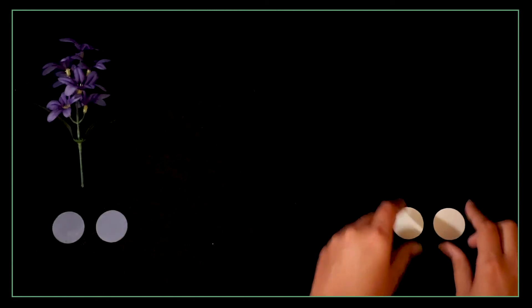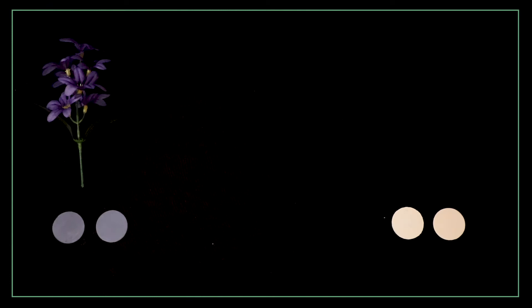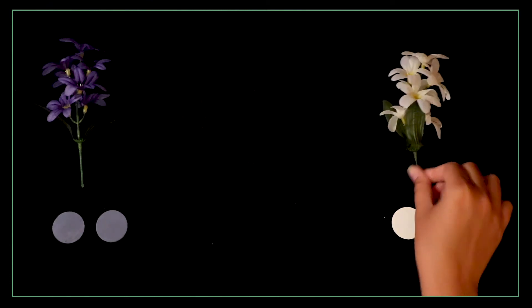Let's start with this example. There are two purple alleles in this genotype. And look the flower's phenotype is purple. Now we'll look at this example. There are two white alleles in the genotype. Well no surprise the flower's phenotype is white.